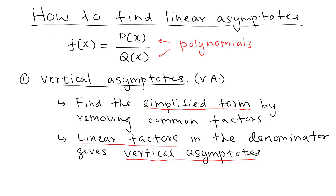Now let's look at the actual theory. Given a rational function f(x) = p(x)/q(x), for vertical asymptotes: first simplify and remove all common factors, then factor the denominator completely into linear factors. Each linear factor gives a vertical asymptote. For example, x² + 1 cannot be factored over the reals, so it gives no vertical asymptote, but x² − 1 factors as (x−1)(x+1) and gives two vertical asymptotes.